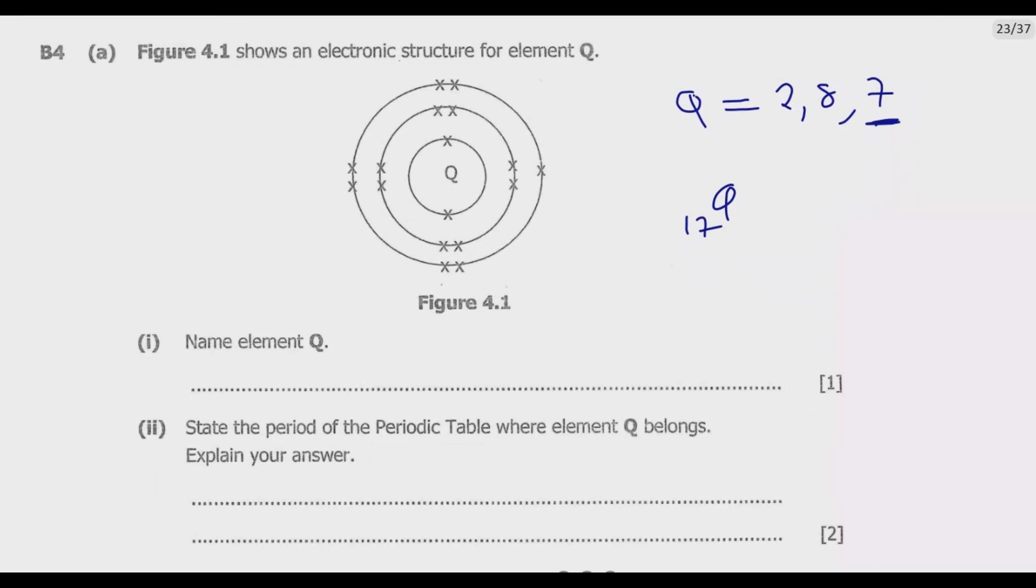So this is how you identify this element. Start with the electronic configuration structure. Then we know that the atomic number is 17, or the number of protons in this element.